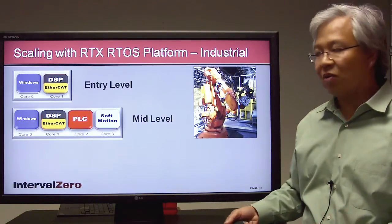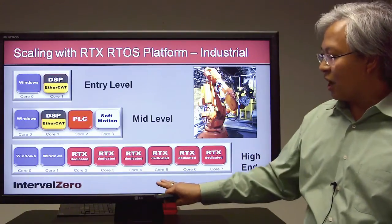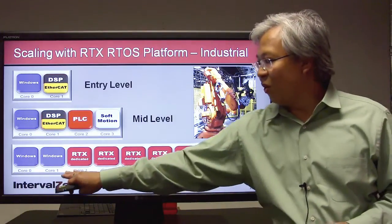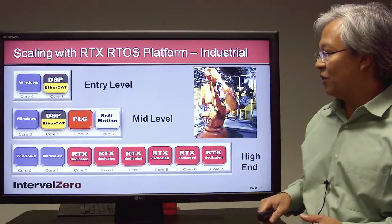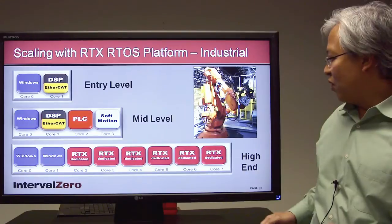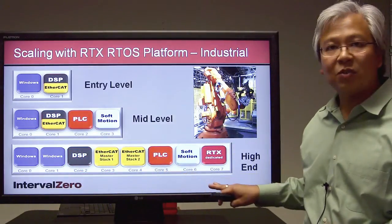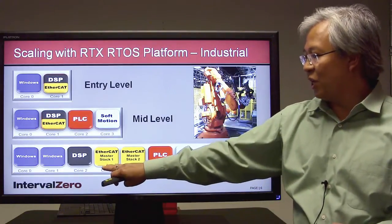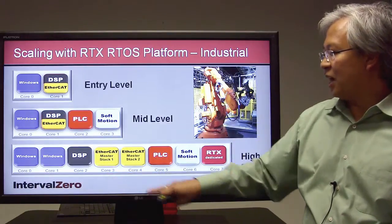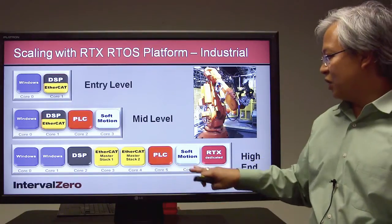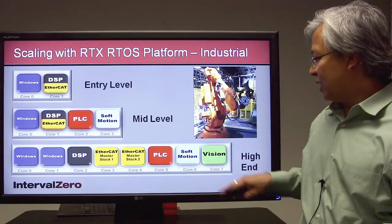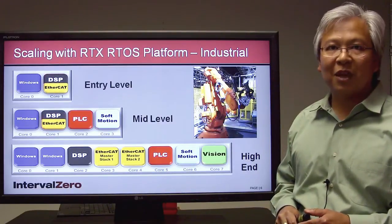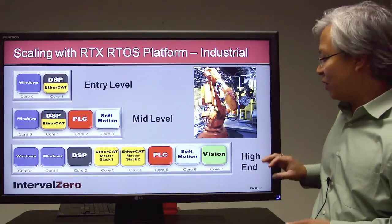Say after development you want to go to a next-generation system. In this final high-end system, you can get a COTS board with an eight-core Intel or AMD processor — two Windows cores and six RTX dedicated cores. Windows has its own scheduler, RTX has its own dedicated real-time scheduler, and your same application engine will move over to the high-end system. With so much more dedicated real-time processing power, you have a full core dedicated for DSP, two cores dedicated for EtherCAT — one stack for control, one for IO communications — a PLC, soft motion, and one additional RTX core implementing a vision application. This is a truly scalable architecture that can scale from entry-level all the way into high-end.